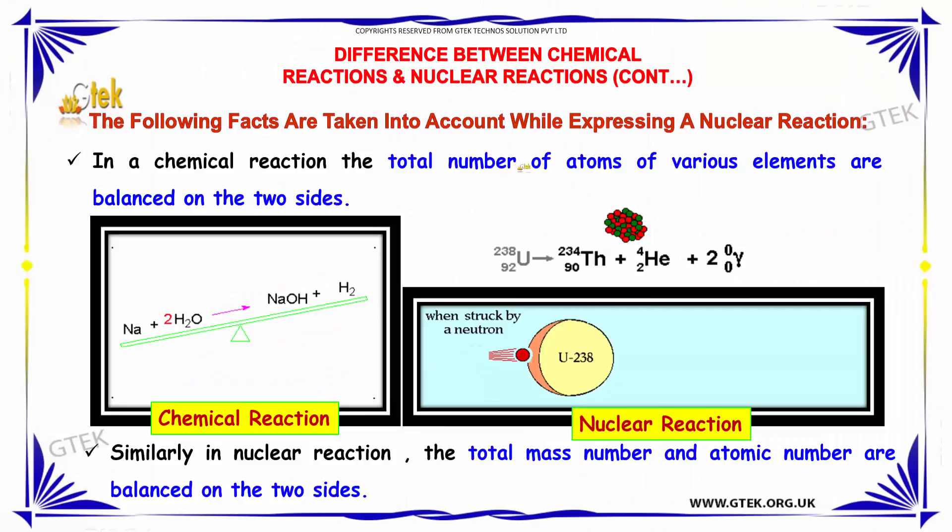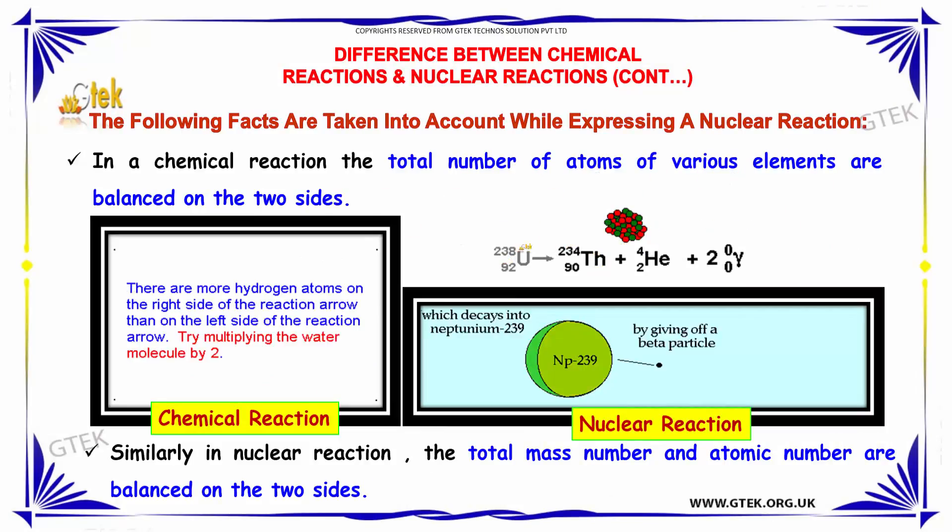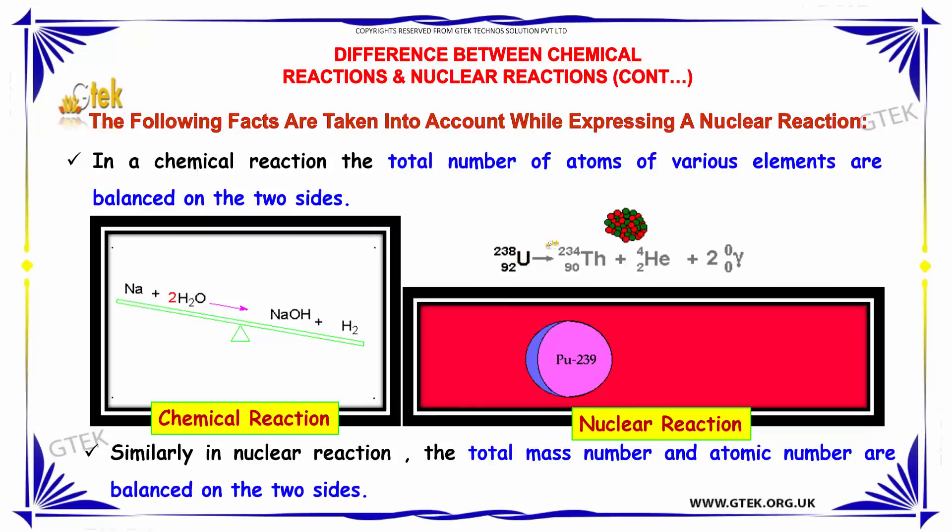In any chemical reaction, the total number of atoms of various elements are balanced on both sides. Similarly, in nuclear reaction, the total mass number and atomic number are balanced on the two sides.